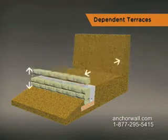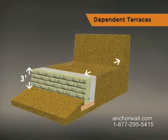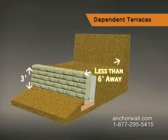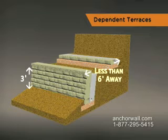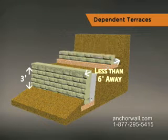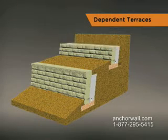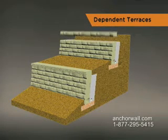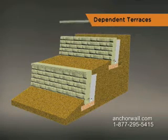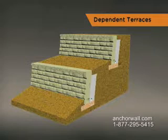For example, if the height of the lower wall is three feet and the upper wall will be less than six feet away, your terraced walls are structurally dependent on each other. If this is the situation, consult a professional engineer who will take global stability into account when designing structurally dependent walls.